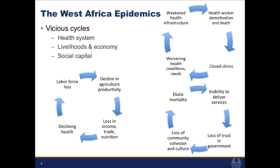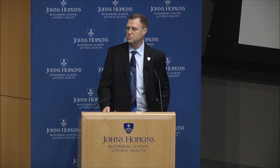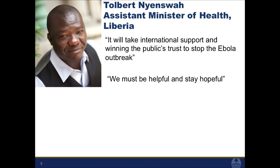Part of breaking these cycles is through leadership. I want to highlight Tolbert Nienswa, the assistant minister of health in Liberia and point person for the Ebola outbreak. He's also an MPH graduate of the School of Public Health and an associate faculty member. He has written about the importance of taking international support to win the public's trust to stop the outbreak. His statement, which I've used as the title, is: 'We must be helpful and stay hopeful' — said not only to the international audience but to his own staff and people. The slogan within Liberia is something to the effect of 'stay safe and keep serving.'